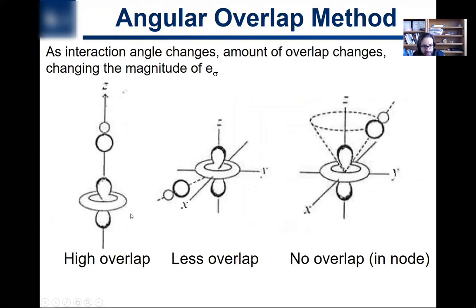And so that's what this is saying here, high overlap there, look, you got straight on interaction. Here, yeah, you're doing some interaction with the donut there, D-Z squared, but it's not going to be so great. And here, you're in this conical node of D-Z squared, and so no overlap.